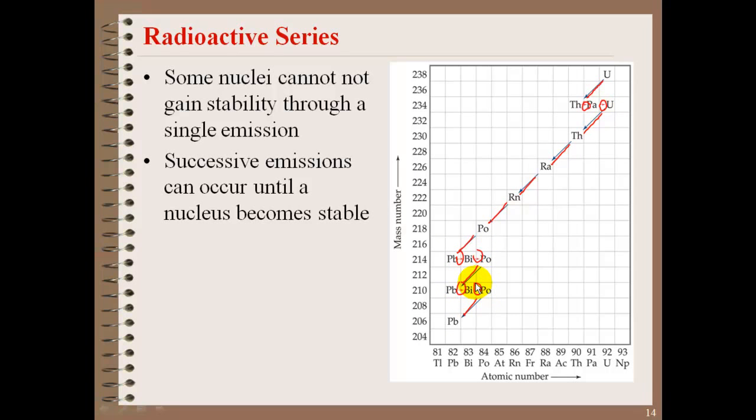So uranium-238 will go through an alpha, beta, beta, alpha, alpha, alpha, alpha, beta, beta, alpha, beta, beta, alpha, to become stable at lead-206.